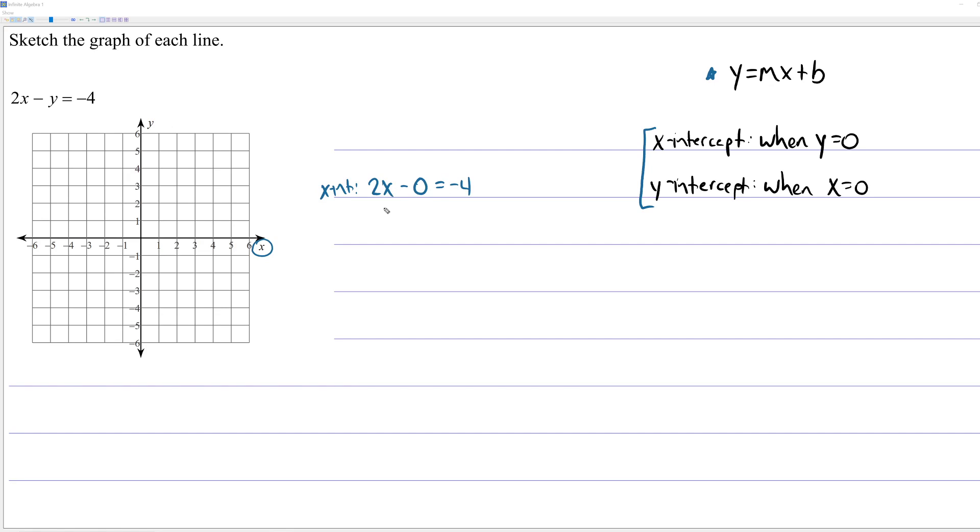And then you have an equation that you can solve, and usually it's not even a very difficult equation to solve. Here we have 2x is negative 4, so x is negative 2. That means we know that our line crosses the x-axis at negative 2.